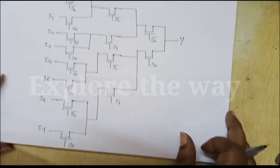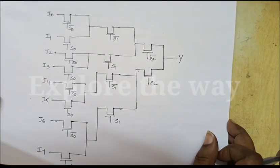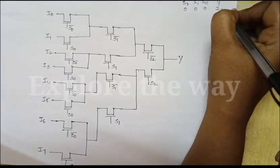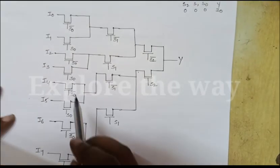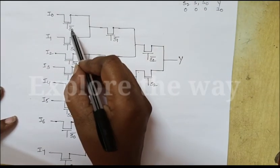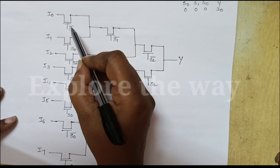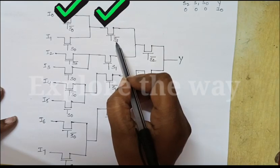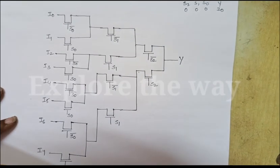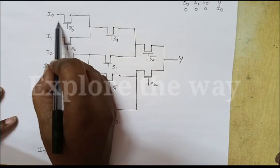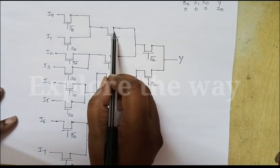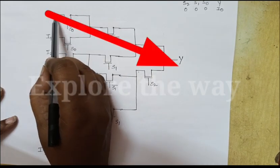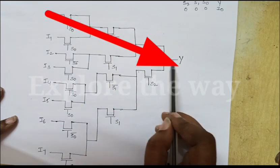This is the schematic diagram for the 8-to-1 multiplexer using pass transistor logic. When S0, S1, and S2 are all 0, the output is I0. Let us verify this: when S0 is 0, this transistor will be active because S0-bar is 1. When S1 is 0, this transistor will be active. When S2 is 0, this transistor will be active — so these transistors act like closed switches and I0 is connected to Y.